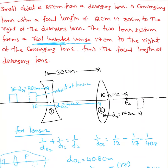Here is the next example in the combination of lenses. A small object is 25 cm from a diverging lens. A converging lens with a focal length of 12 cm is 30 cm to the right of the diverging lens.